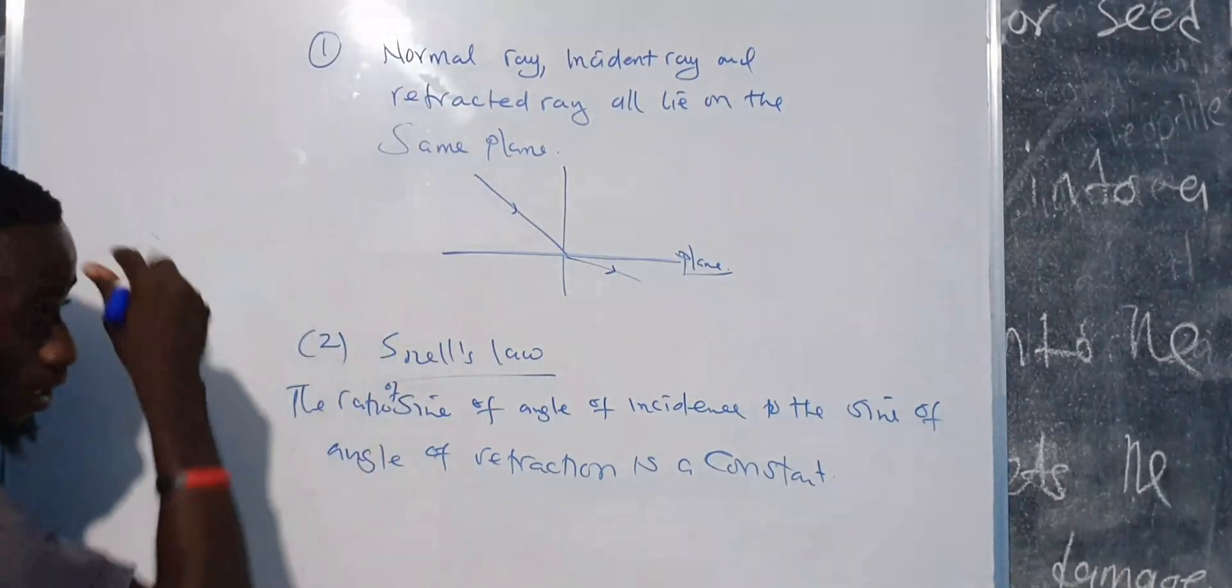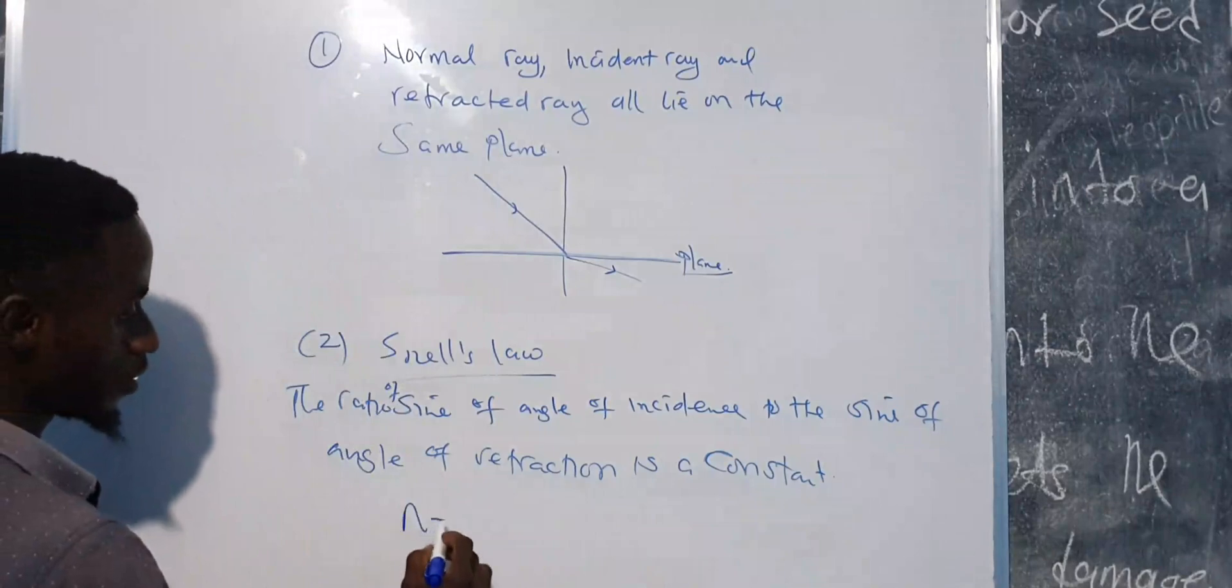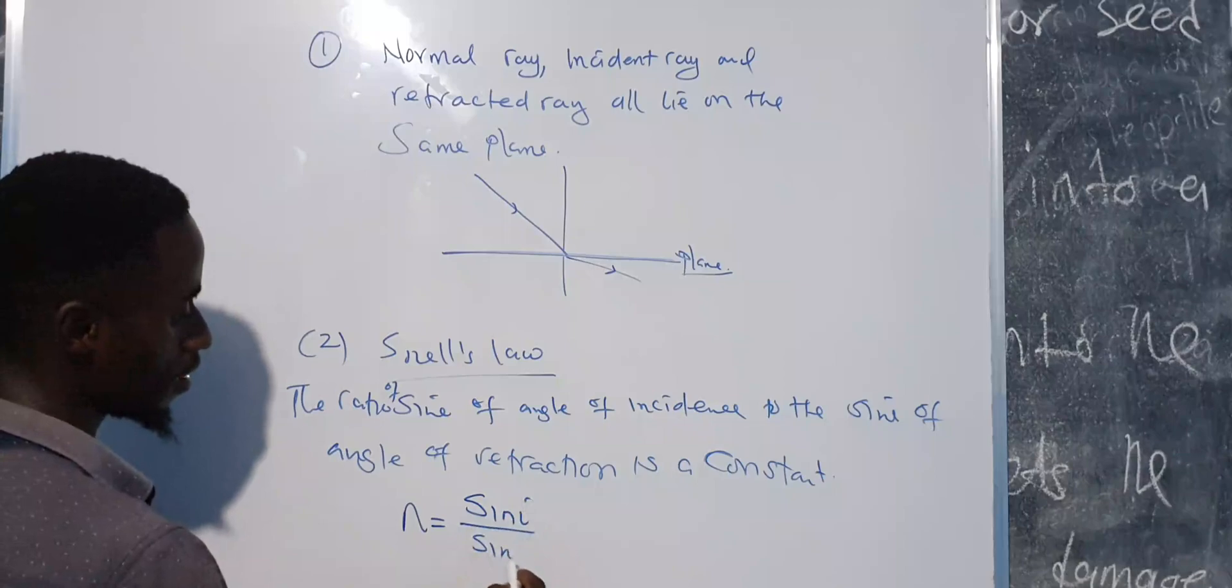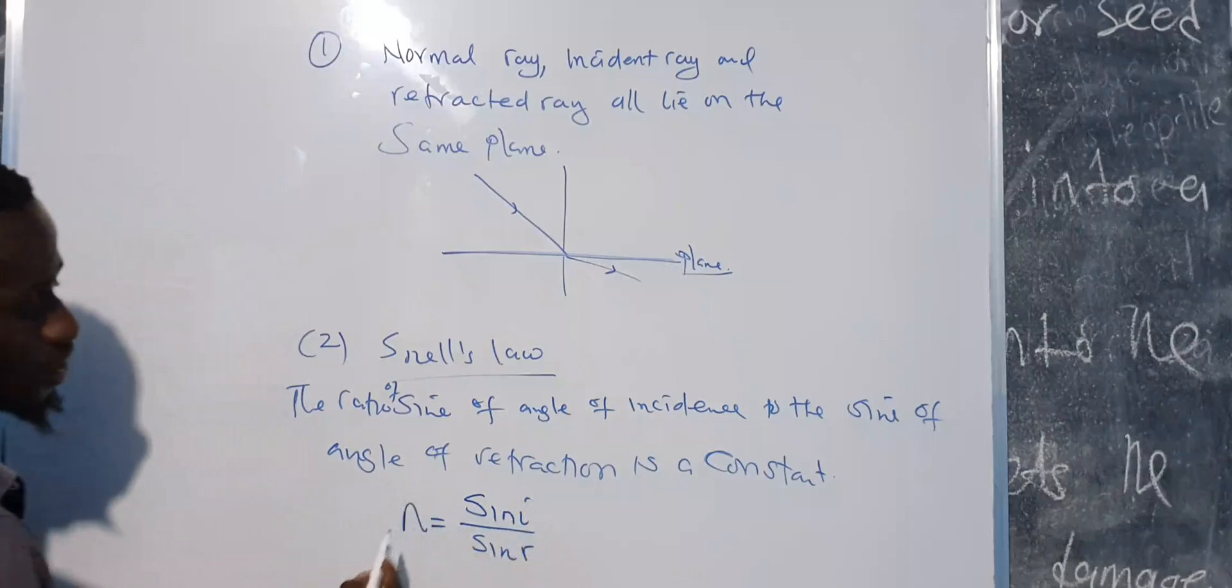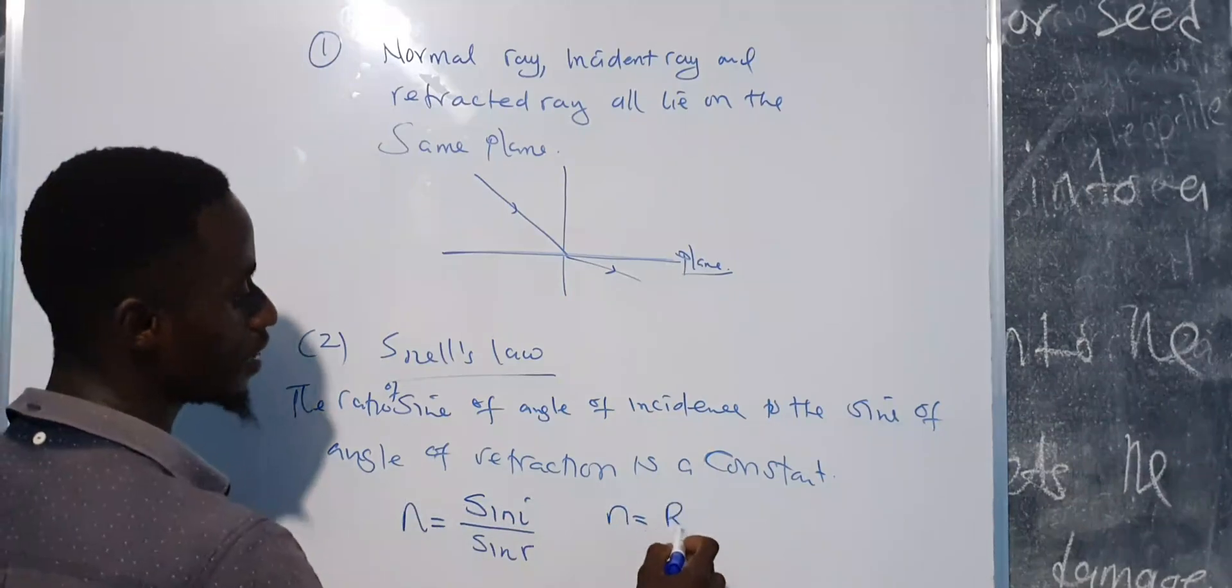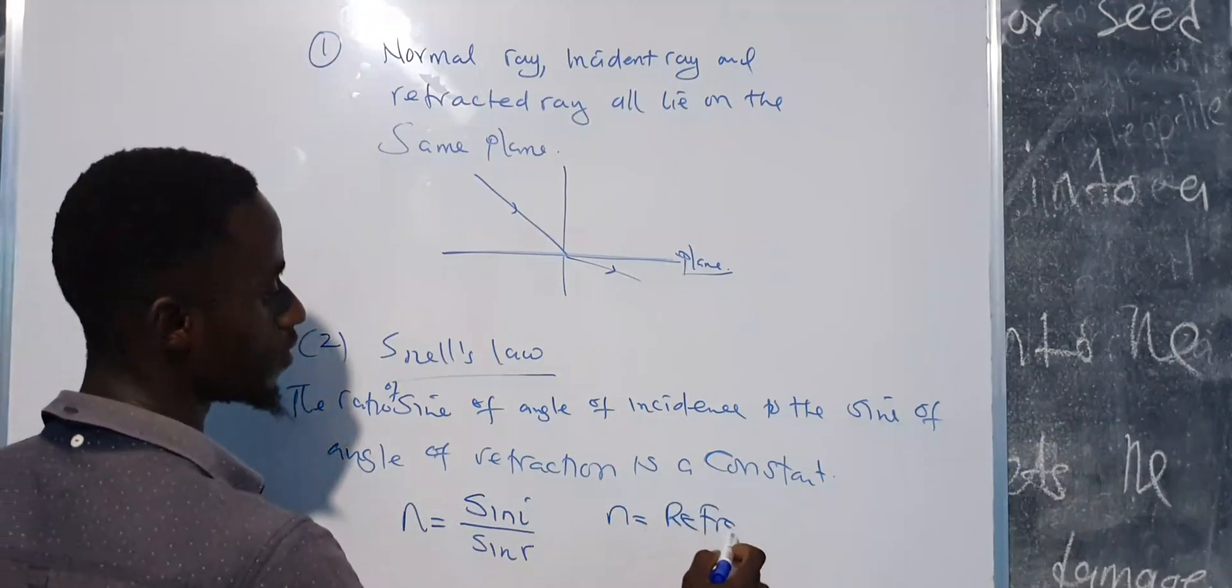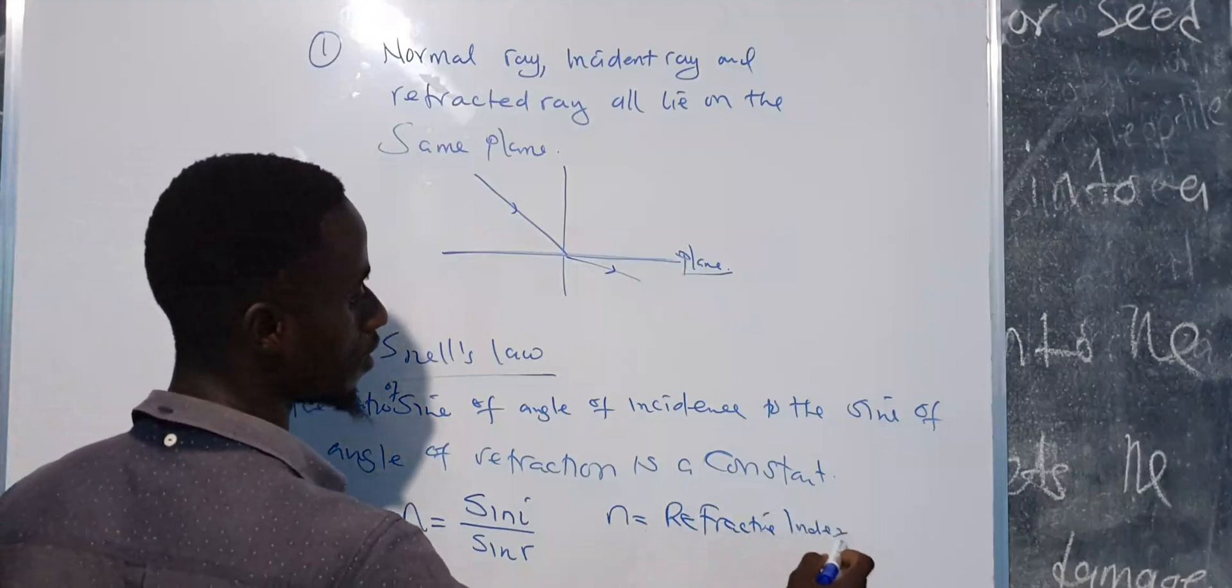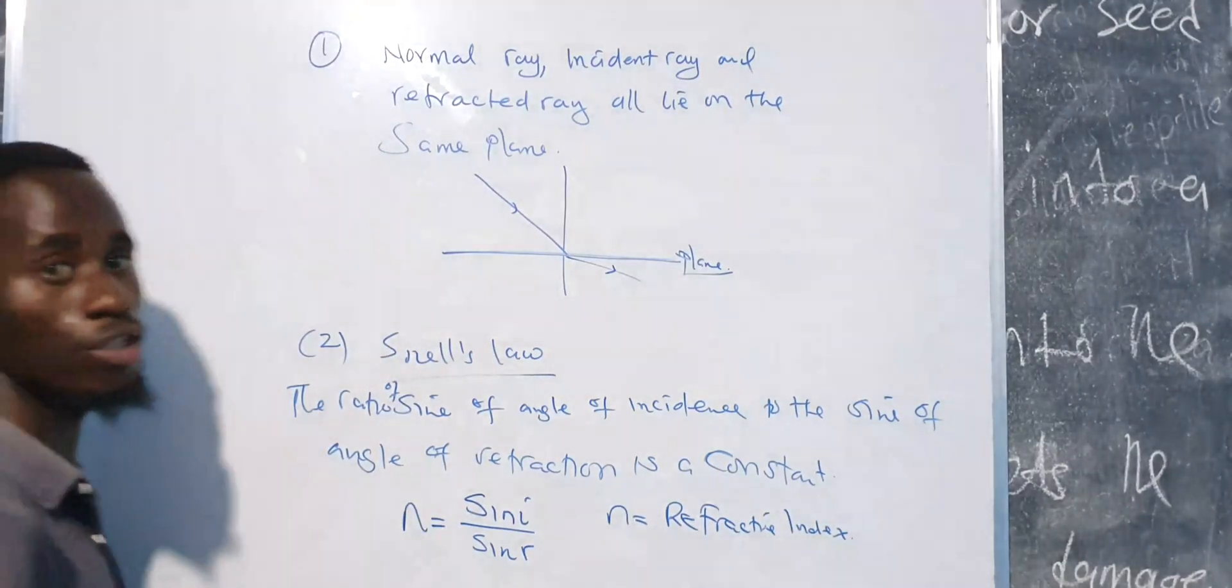But what does that mean? It means that sine i over sine r is equal to this constant. Now, this n you are seeing here is what we call the refractive index. And this is where we have ended. Thank you so much.